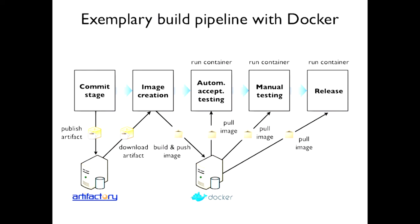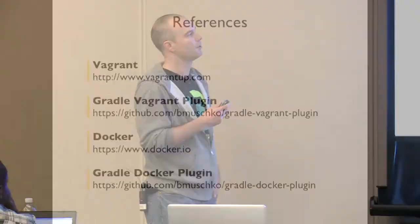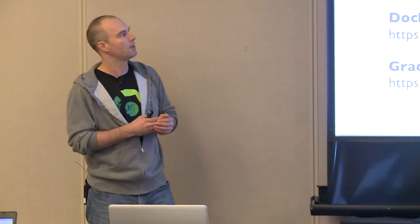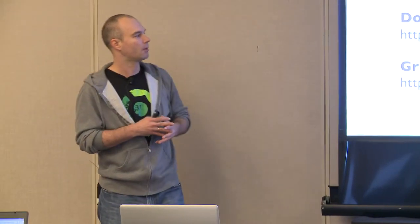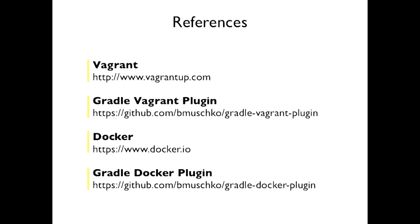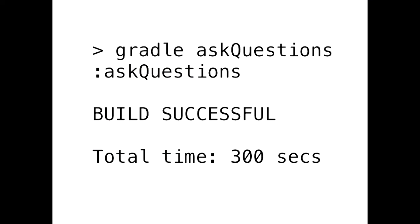You can also pull that image to bring up your own local development environment if you want to — it kind of depends on your use case. That's pretty much what I wanted to cover for today. If you want to look at the references, Vagrant and Docker plugins are listed here. I'm now open to more questions.